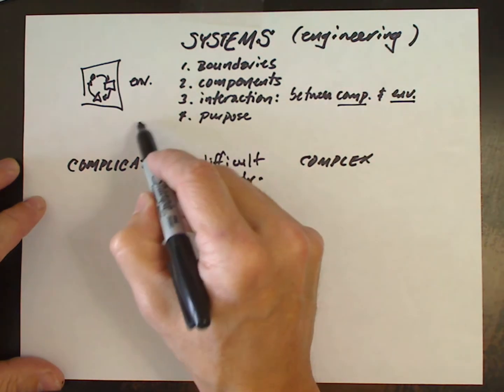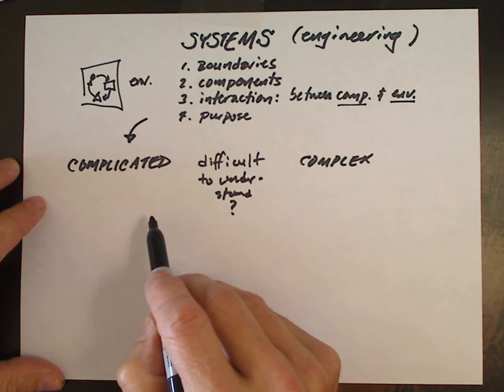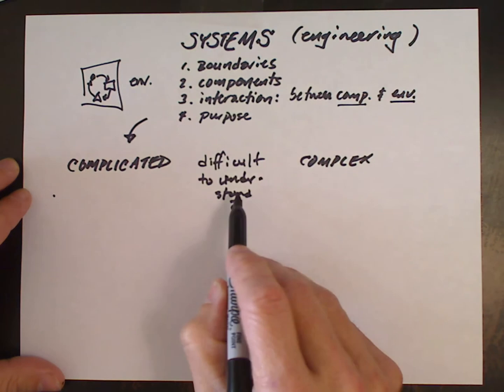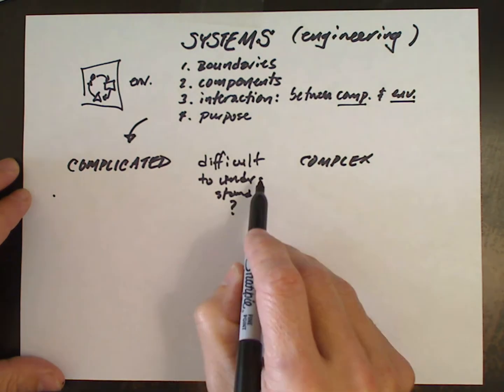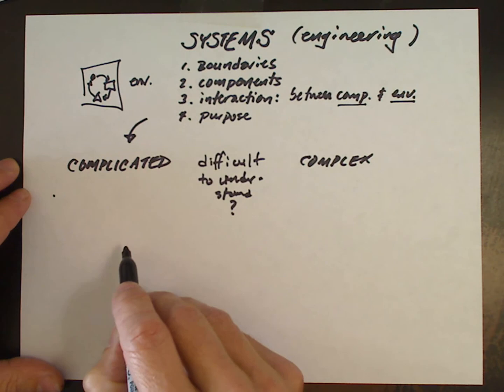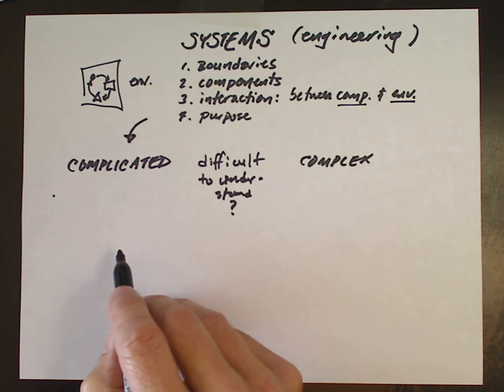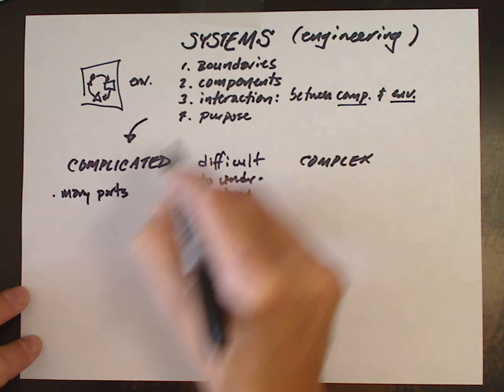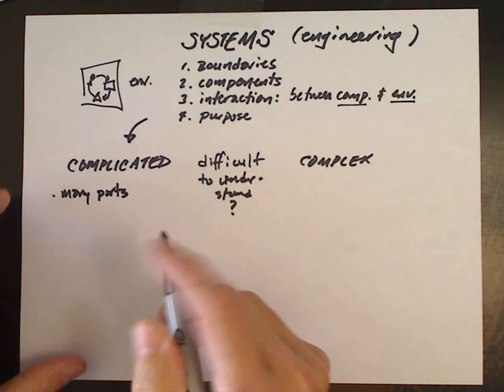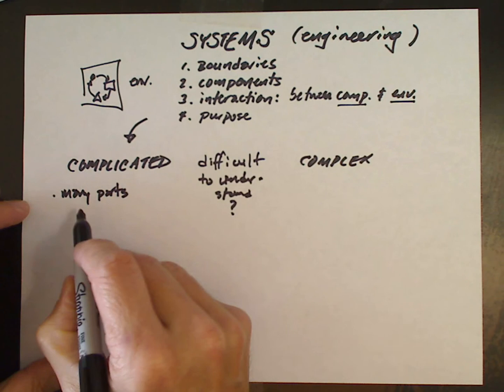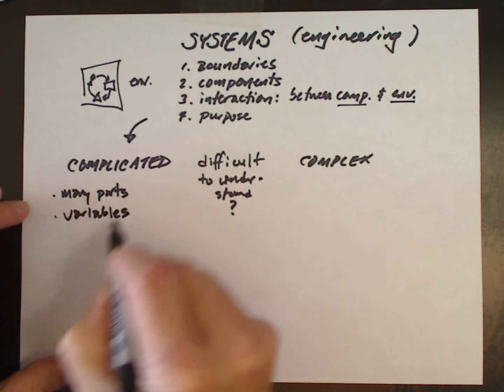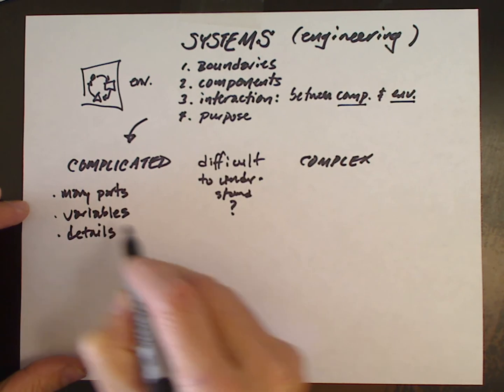Engineering systems often fall into this category of complicated. And what does that mean? Well, certainly difficult to understand. Both complicated and complex systems can be difficult to understand. But why? What are the characteristics of complicated systems? The first typical characteristic is that they have many parts. They have lots of components. They have lots of inter-workings. That is, they may have lots of variables, lots of pieces, lots of details.